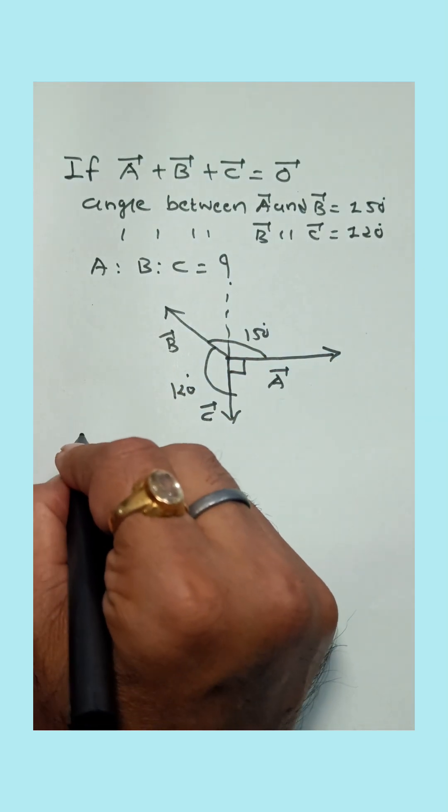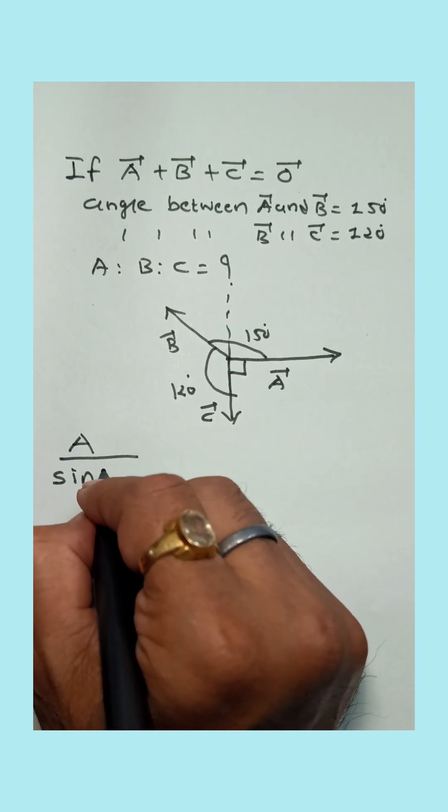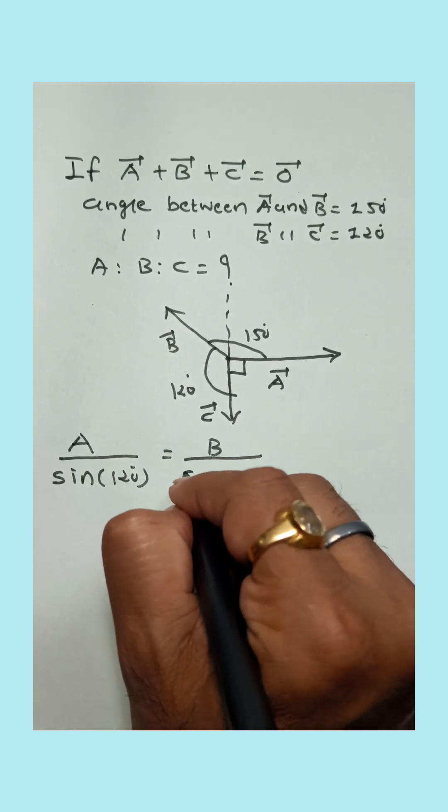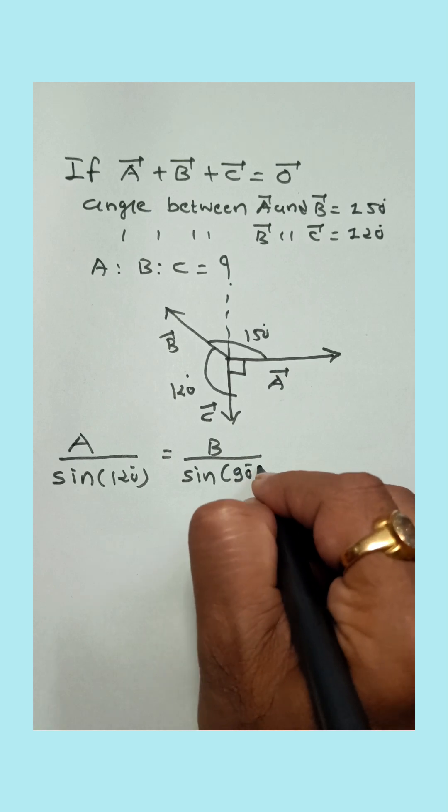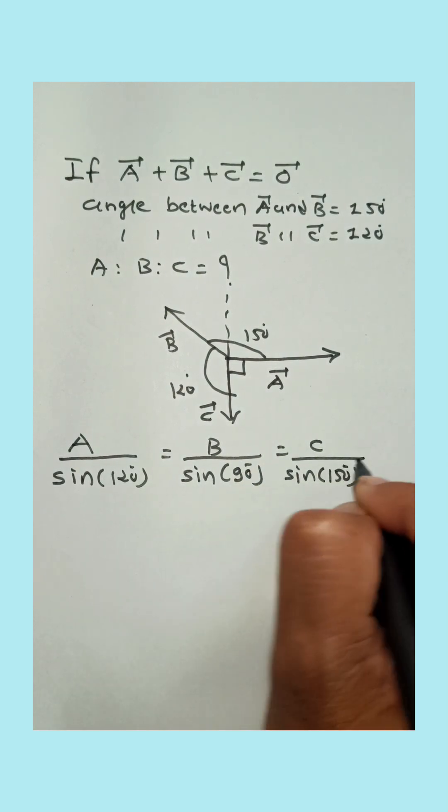Now use Lami's theorem. A upon sine angle between B and C, that is 120, is equal to B upon sine angle between A and C, that is 90, is equal to C upon sine angle between A and B, that is 150.